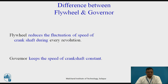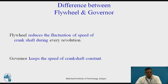Now let us see the difference between flywheel and governor. A flywheel reduces the fluctuation of speed of the crankshaft during every revolution. This fluctuation is mainly due to the non-availability of continuous power strokes — the power stroke is intermittent, and during suction, compression, and exhaust strokes the energy is utilized. This causes variation in speed, i.e., between omega max and omega minimum. To reduce this difference between omega max and omega minimum, we make use of a flywheel, which reduces the fluctuation of speed, though some fluctuation will still remain.